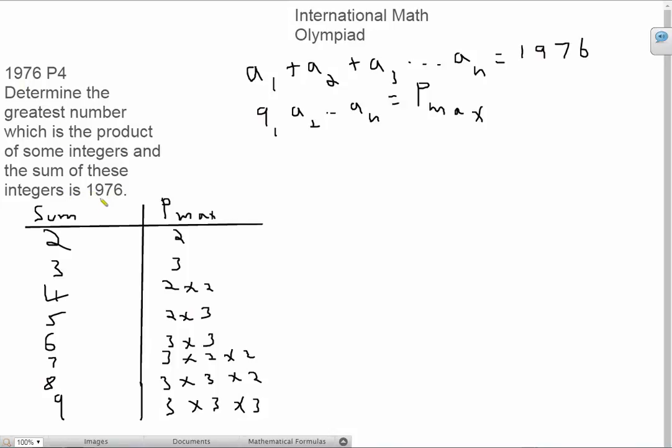When dealing with problems like these, it's often better to just write it down. So I've written it here: a1 plus a2 plus a3 till aN must equal 1976, and a1 times a2 till aN must equal pmax. We don't know what this is, this is what we have to find.